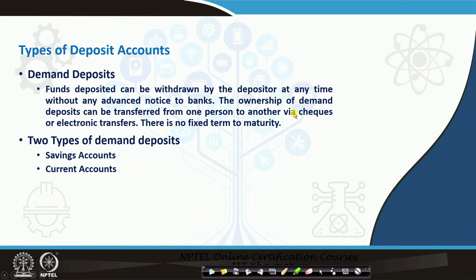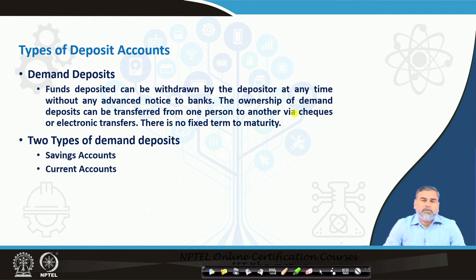Whenever we talk about types of deposits in commercial banks, they provide different types, but broadly categorized there are two major types: demand deposits and time deposits. We have already discussed this when looking at the balance sheets of commercial banks, where liabilities are classified into these two major deposit categories.